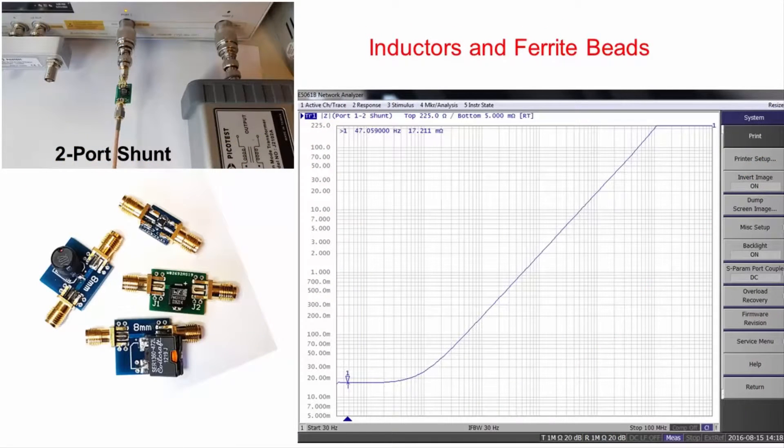The two-port shunt method is also ideal for measuring power inductors and ferrite beads, both of which can include low impedance and high dynamic range. And again, since the low impedance occurs at low frequency, a coaxial transformer is required.